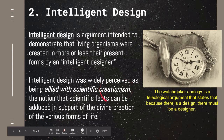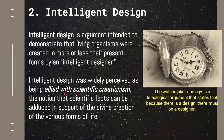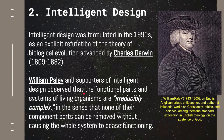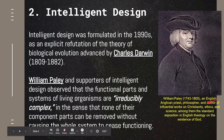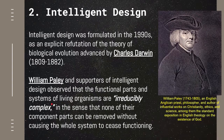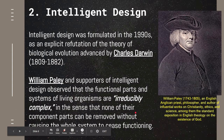They subscribe to biblical creationism while using scientific facts and evidence as their basis. Intelligent design was formulated in the 1990s as an explicit refutation of the theory of biological evolution advanced by Charles Darwin. One of the most prominent movers of intelligent design was William Paley, an English Anglican priest, philosopher, and author of influential works on Christianity, ethics, and science. William Paley and his supporters of intelligent design observed that the functional parts and systems of living organisms are irreducibly complex, meaning that they cannot exist without a designer because they cannot be removed without causing the whole system to cease function.